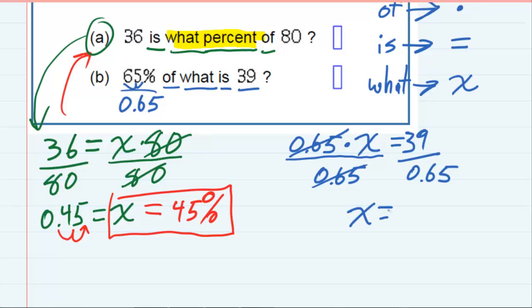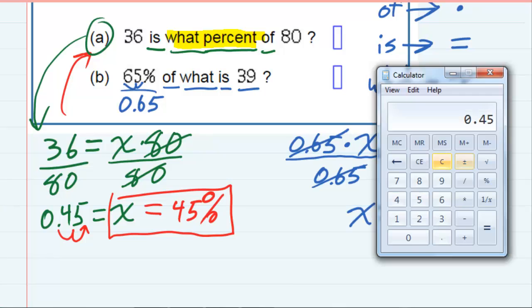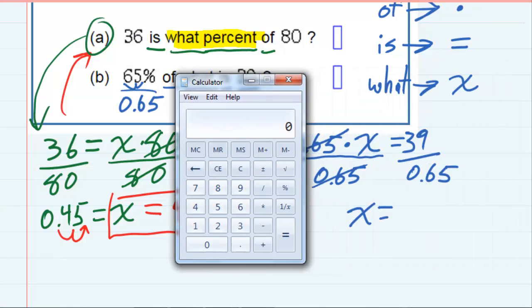And then I will have X equals, if I bring my calculator back up, 39 divided by 0.65 equals 60.